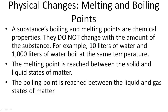We're going to talk about a specific type of physical change: melting and boiling points. A substance has a melting and a boiling point, and those are chemical properties. What that means is these do not change with the amount of the substance.